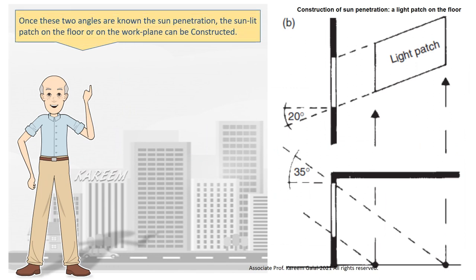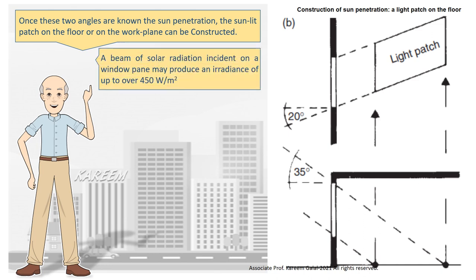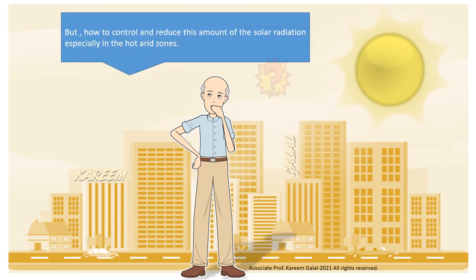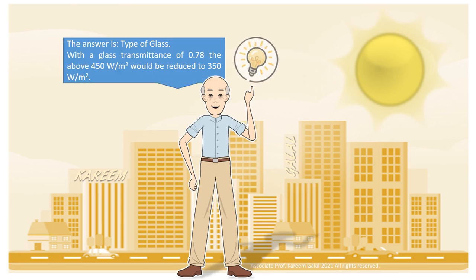Once these two angles are known, the sun penetration — the sunlit patch on the floor or on the work plane — can be constructed. A beam of solar radiation incident on a window pane may produce an irradiance of up to over 450 W/m². With a glass transmittance of 0.78, the above 450 W/m² would be reduced to 350 W/m².